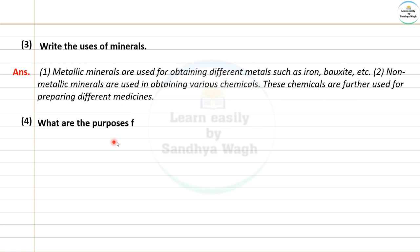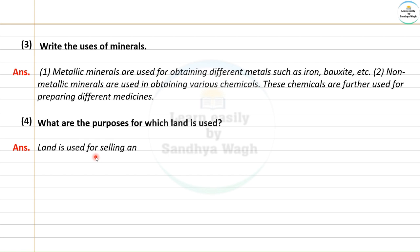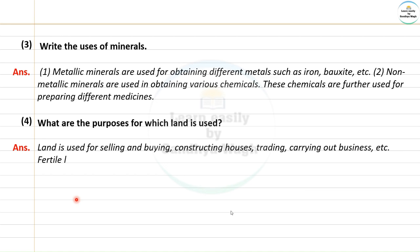Next question: what are the purposes for which land is used? Land is used for selling and buying, constructing houses, trading, and carrying out business. Fertile land is used for agriculture.